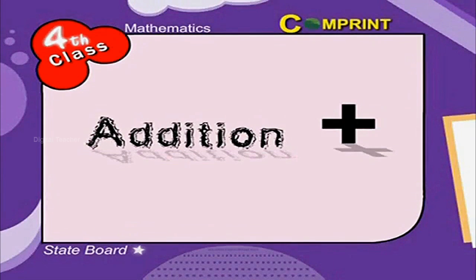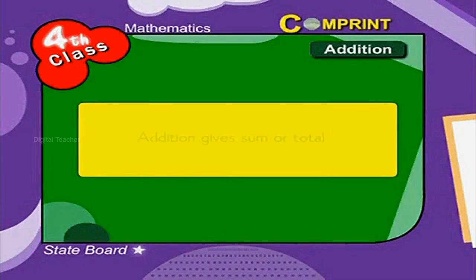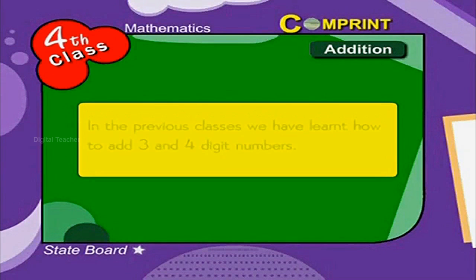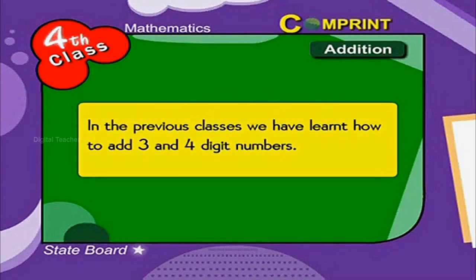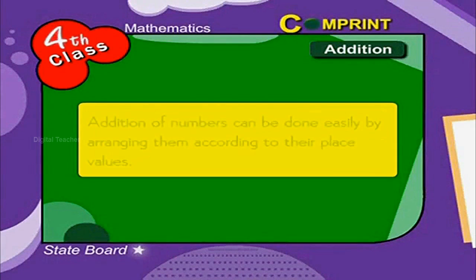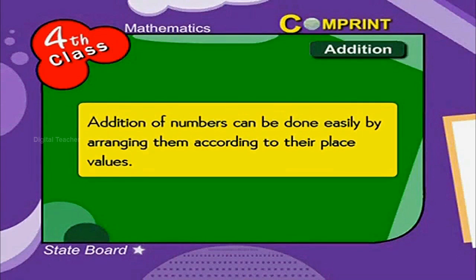Addition gives sum or total. This is more than any of the given numbers. In the previous classes we have learnt how to add 3 and 4 digit numbers. Now let us see how to add 5 or 6 digit numbers. Addition of numbers can be done easily by arranging them according to their place values.